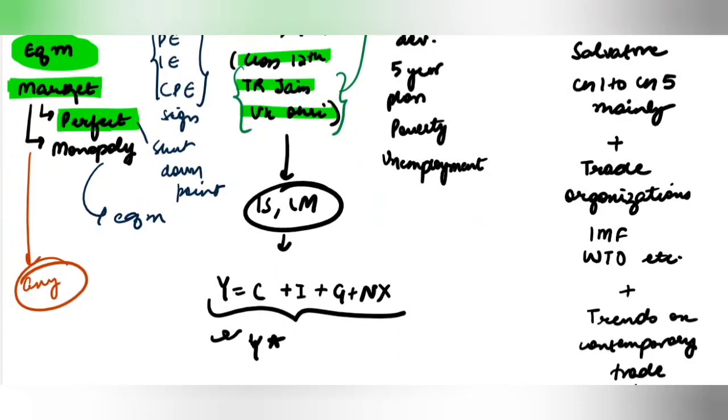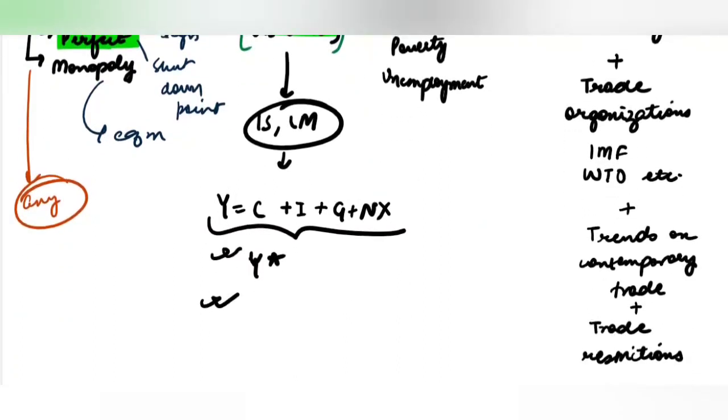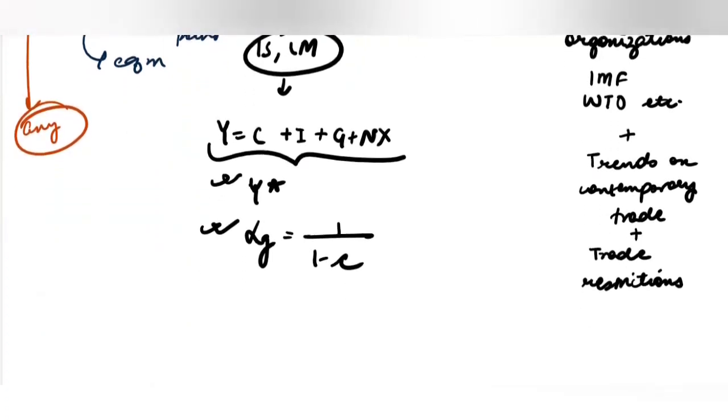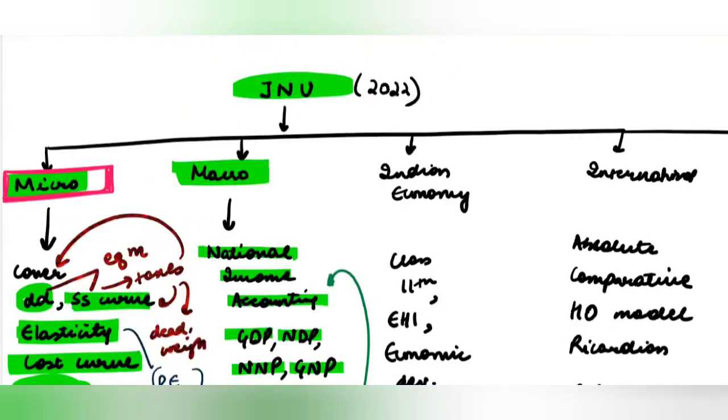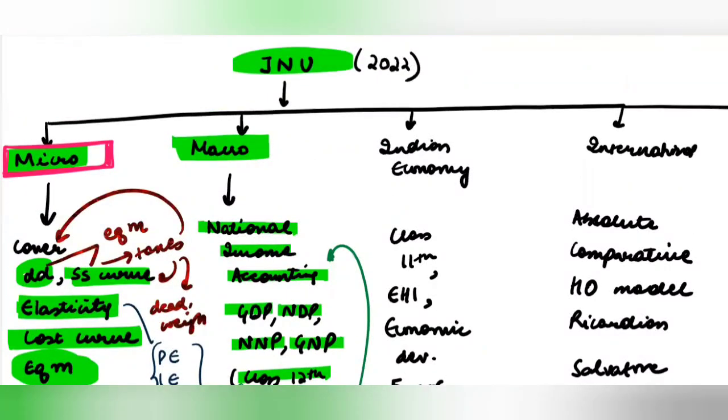From here, you should be able to calculate Y star. You should be able to calculate your alpha G, which is 1 upon 1 minus C, the government multiplier. You should know the value of the balanced budget multiplier, which is 1. Otherwise, nothing else is required for macroeconomics.